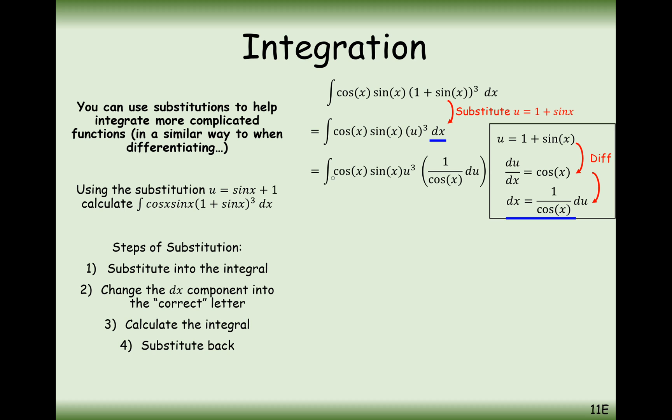Substitute that in, and we'll see that the cos x's cancel each other out. Now, what we'll have left, we've still got this factor of sin x at the front. So we've got sin x u to the power of 3.